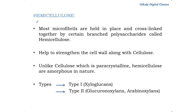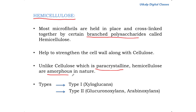The next component is hemicellulose. Hemicellulose is similar to cellulose, but cellulose is paracrystalline in nature whereas hemicellulose is amorphous. Another major difference is that cellulose is unbranched whereas hemicellulose is branched. Most microfibrils are cross-linked together by these branched polysaccharides called hemicellulose, which help to strengthen the cell wall. There are two types: Type 1 hemicellulose is majorly xyloglucan, and Type 2 includes glucuronoxylans and arabinoxylans.